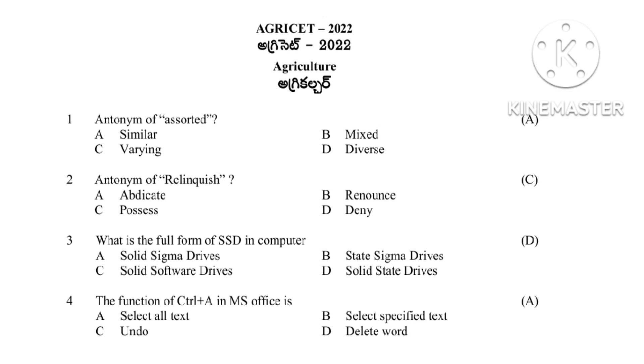Question 2: Antonym of 'Relinquish.' Options are abdicate, renounce, possess, and deny. The answer is 'possess,' as it is the opposite of relinquish.